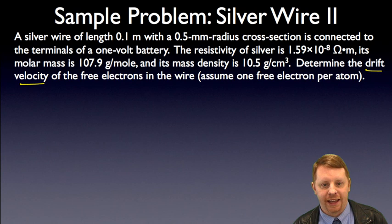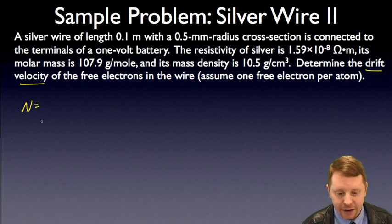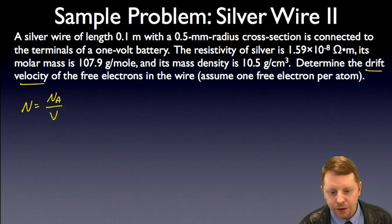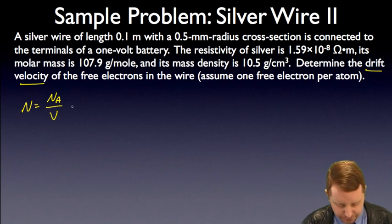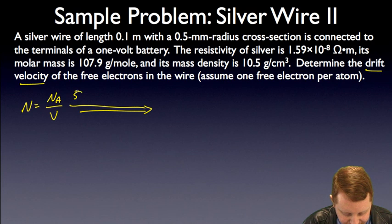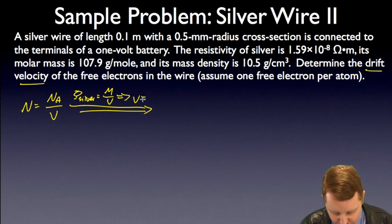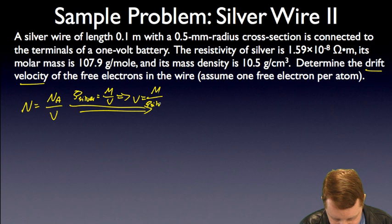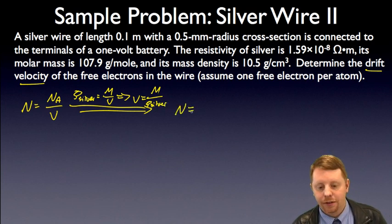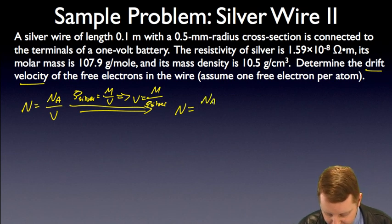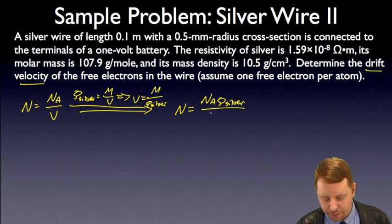Well, I think the first thing we're going to have to find is the charge carrier density. And we can find that charge carrier density is going to be Avogadro's number divided by our volume. And in order to find the volume, well, the density of silver is going to be the mass over volume. Notice this rho here is the density, not the resistivity. Therefore, we can say volume is going to be the molar mass divided by its density. So then n, our carrier density, volume carrier density, will be Avogadro's number times the density of silver divided by its molar mass.